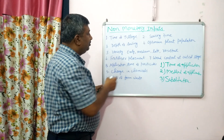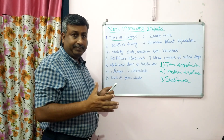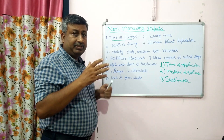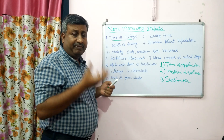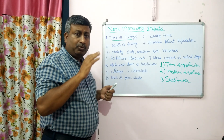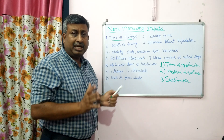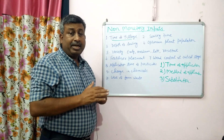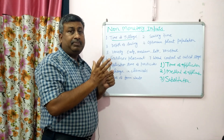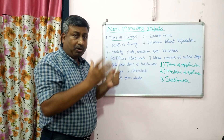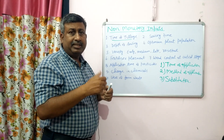An important non-monetary input is time of tillage. We go for ploughing, harrowing, etc. If we go for deep ploughing in summer season — which is before the rains — it increases rainfall interception and reduces weeds and diseases. We do ploughing, but the time of ploughing is very important. Deep ploughing done 20-25 days before the rains means the soil gets hot during the rains, and insects, larvae, and pathogens die.